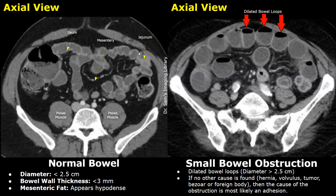Water is used as an oral contrast agent. The normal diameter of small bowel must be less than 2.5 centimeters and the bowel wall thickness should be less than 3 millimeters. This dark gray area is the mesenteric fat — it appears dark gray or hypodense. This is the normal appearance of the mesenteric fat.